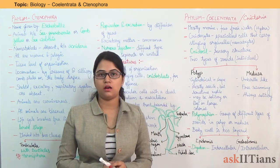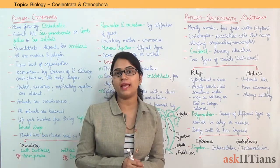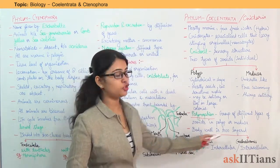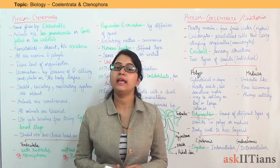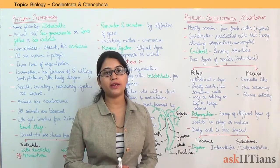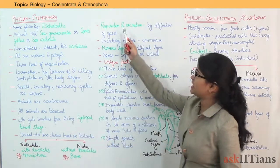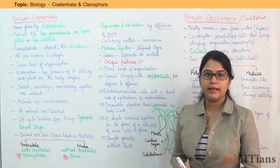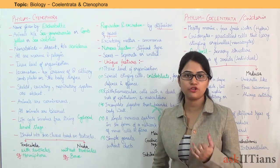These polyp and Medusa form different types of groups, and this different type of group formation is known as polymorphism. The body wall is two-layered in Coelentrata — the outer layer is known as epidermis and the inner layer is known as gastrodermis. Digestion is both intercellular as well as intracellular. Respiration and excretion are both by diffusion of gases.